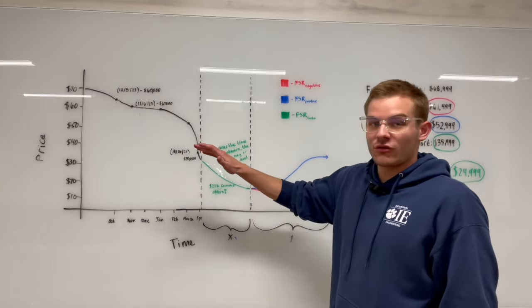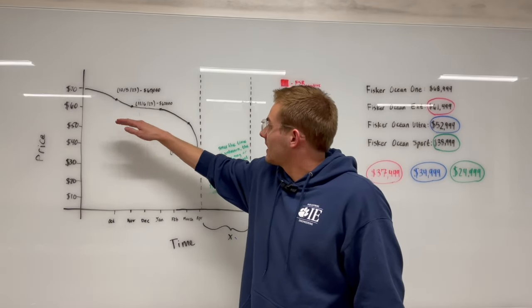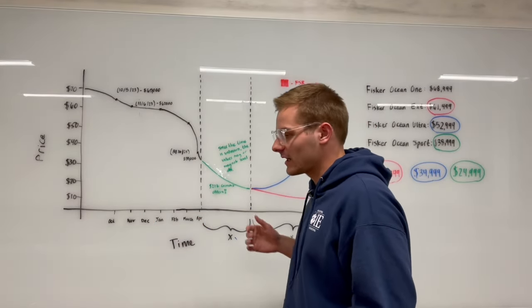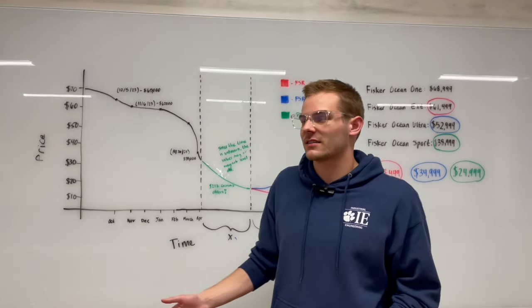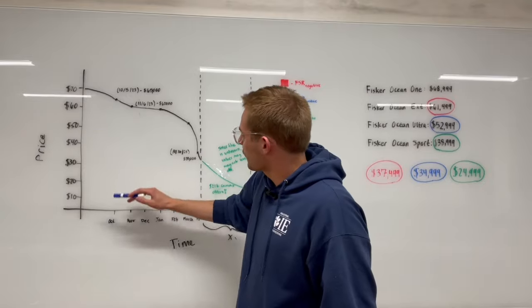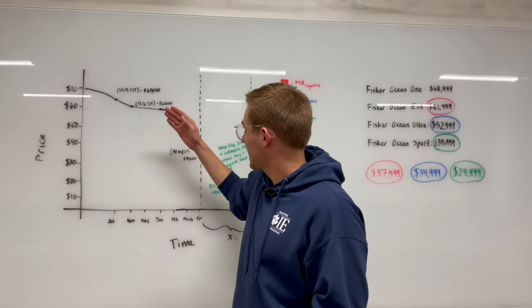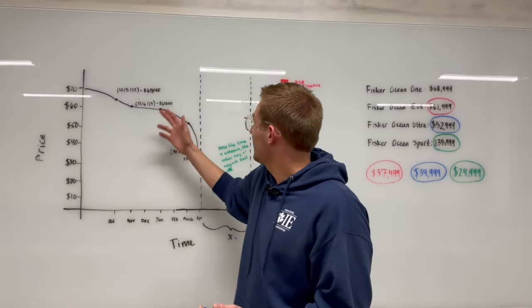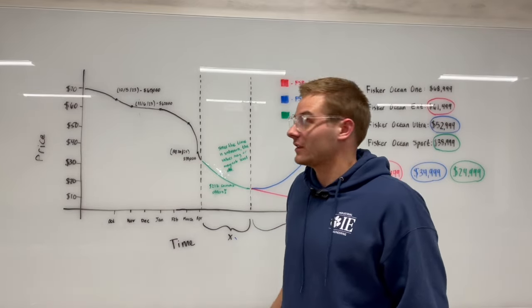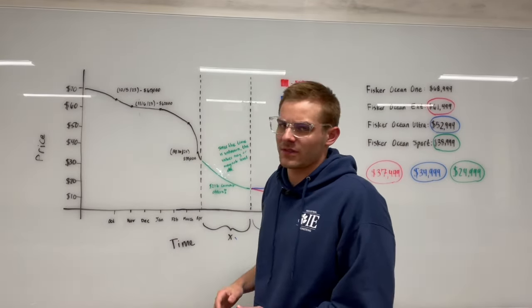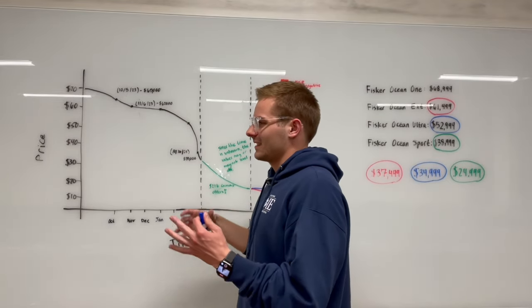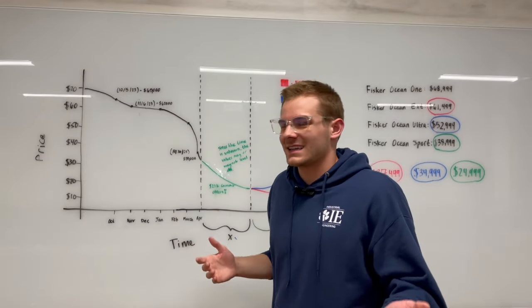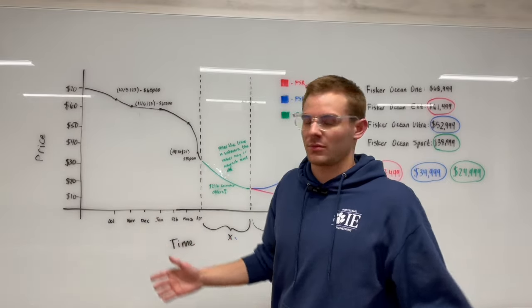In the beginning, the Fisker Ocean wasn't a car people were paying significantly over MSRP for. It wasn't like the Rivian, Hummer EV, or Tesla Cybertruck. After initial deliveries, prices started surfacing in October on Cars and Bids. On October 5th, 2023, a Fisker Ocean bid to $65,000 - the owner didn't accept it, but that gives us a framework. In November, prices started declining slightly, but it wasn't significant. It was kind of average, which we see with most cars.